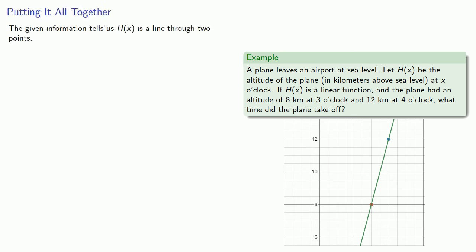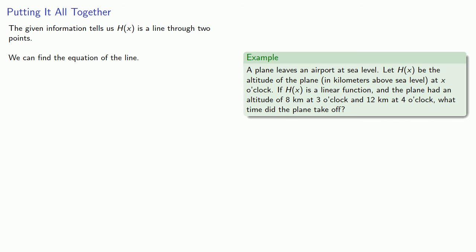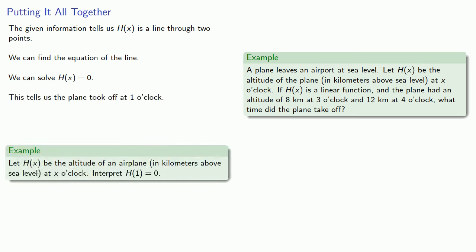Let's put that all together. The given information tells us that h of x is a line through two points, and we can find the equation of the line. We then solve h of x equals 0, and that tells us the plane took off at 1 o'clock.